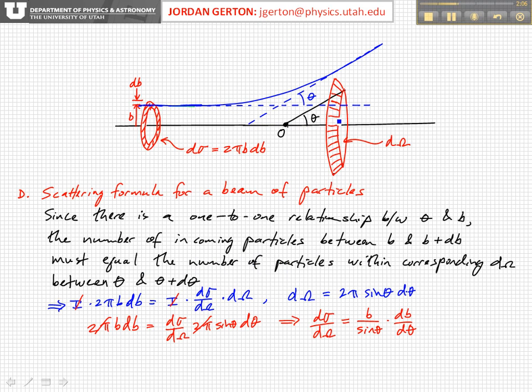So d omega is defined by theta. Basically by varying theta on your detector, you can sum up the number of particle counts in this differential solid angle.